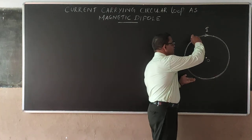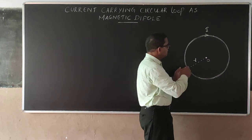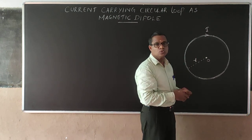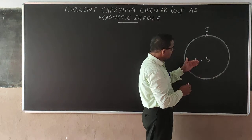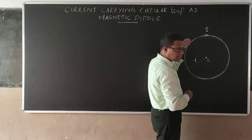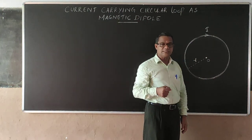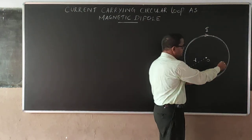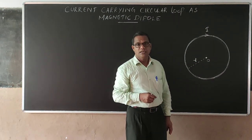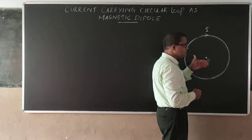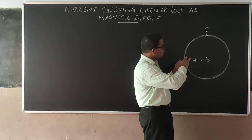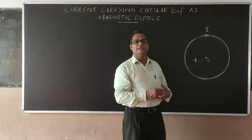Here the current is going in the clockwise direction, and therefore this face of the loop is acting as a south pole, according to the right-hand thumb rule. The other side acts as a north pole because, viewed from the other side, the current flows in the anti-clockwise direction. So the clockwise face is the south pole and the anti-clockwise face is the north pole — two poles separated by a small distance. Thus, a circular loop carrying current acts as a magnetic dipole.